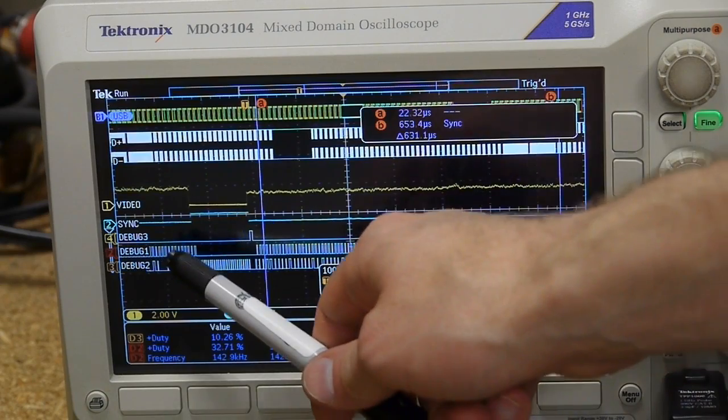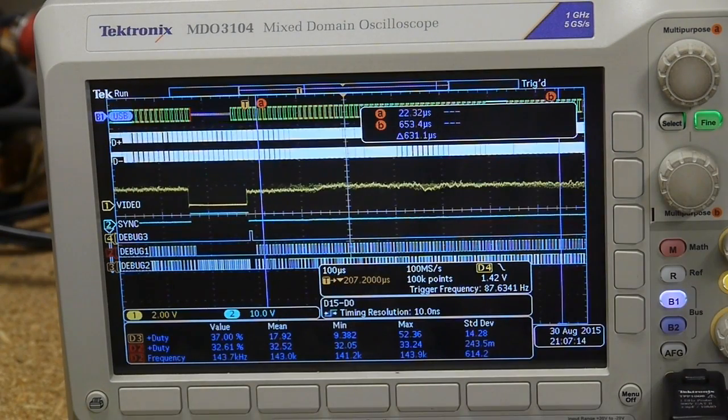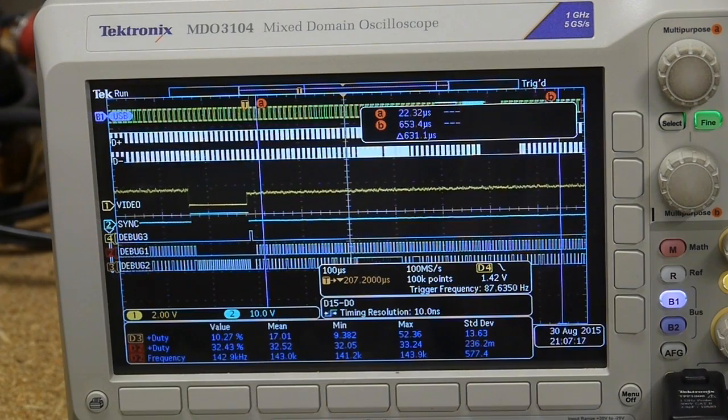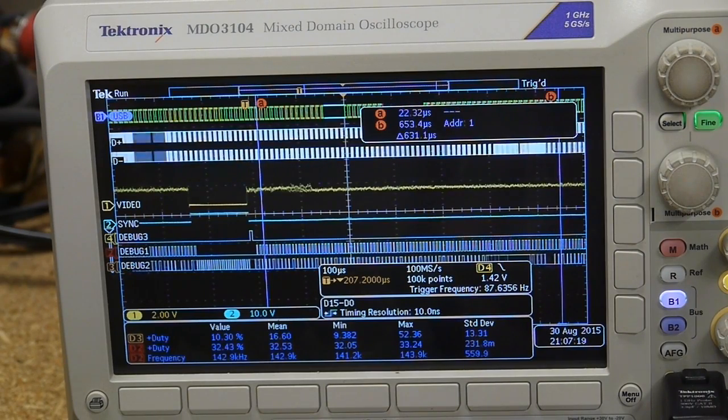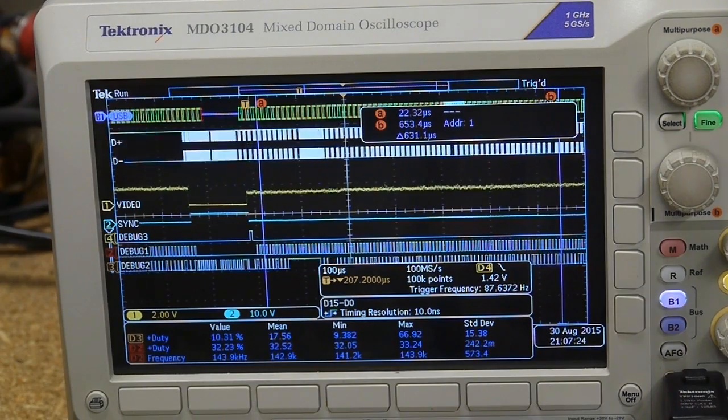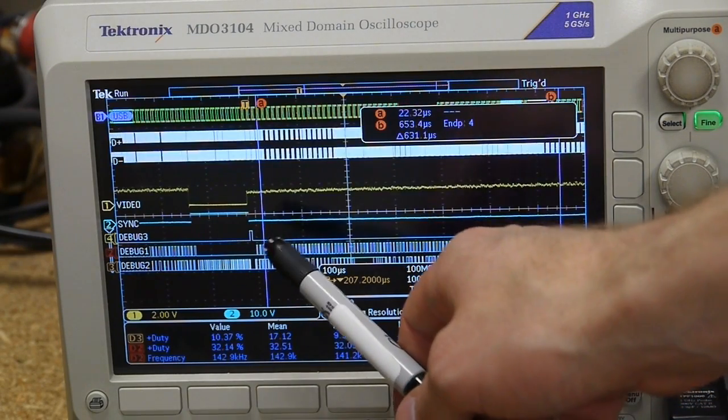Then we have USB on the top here, and the scope is actually decoding the USB data in real time. We also have debug one, two, and three down here, which are digital signals that are generated by the microcontroller.